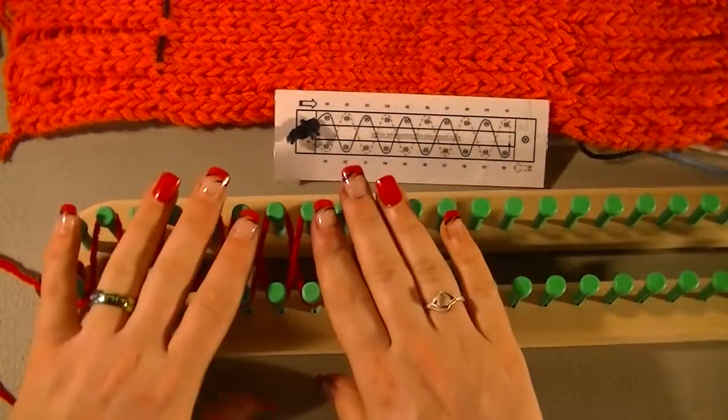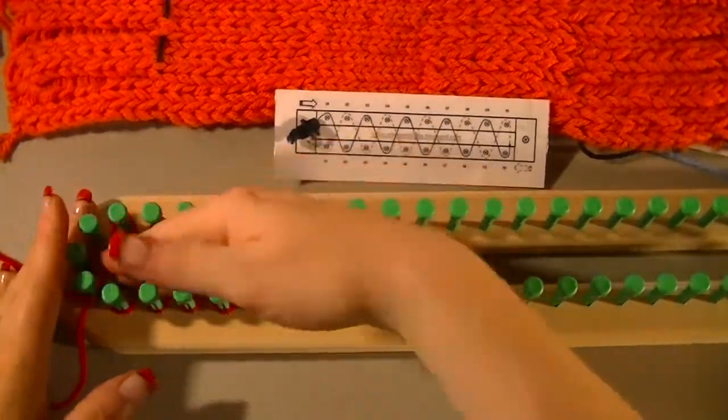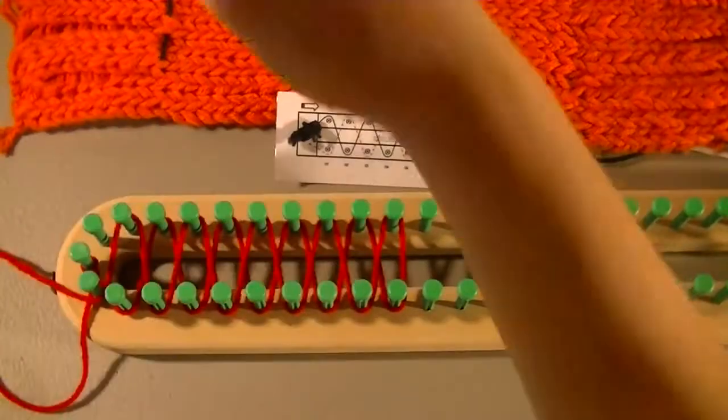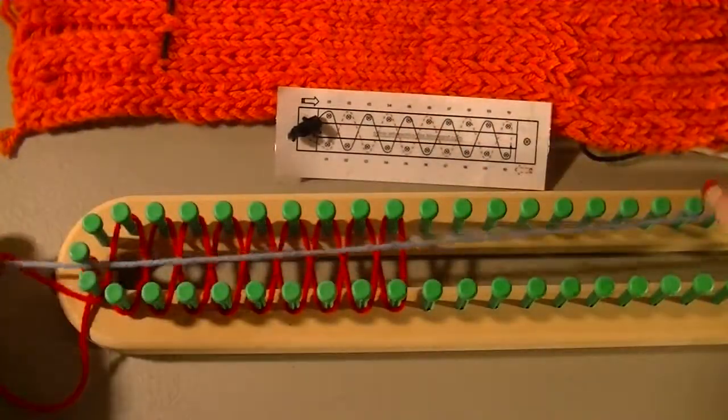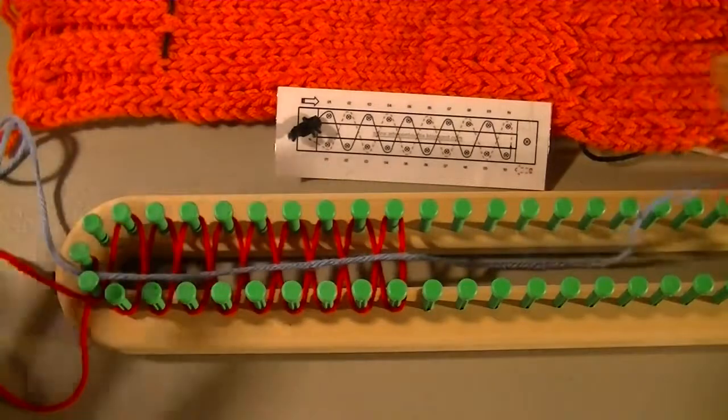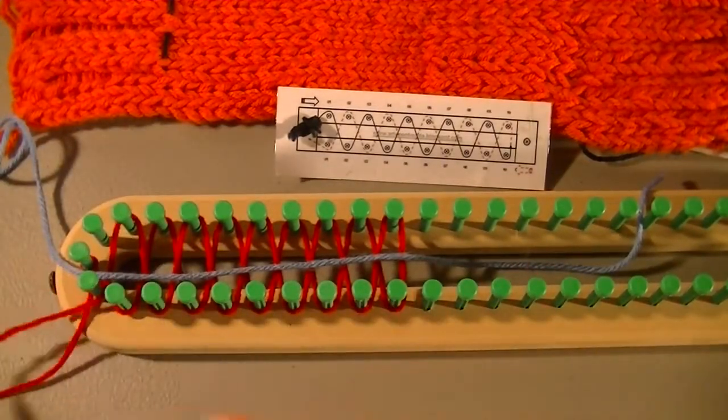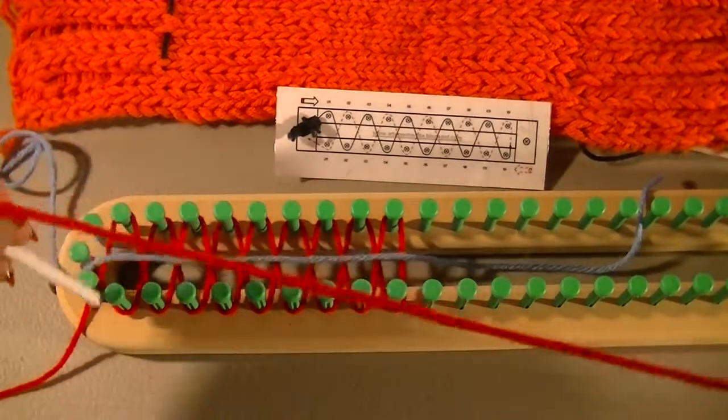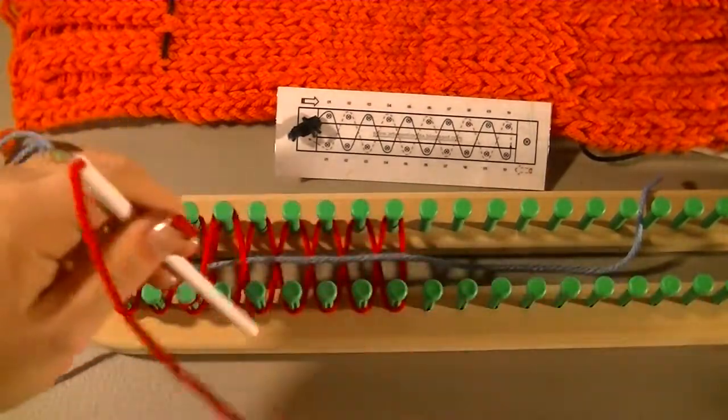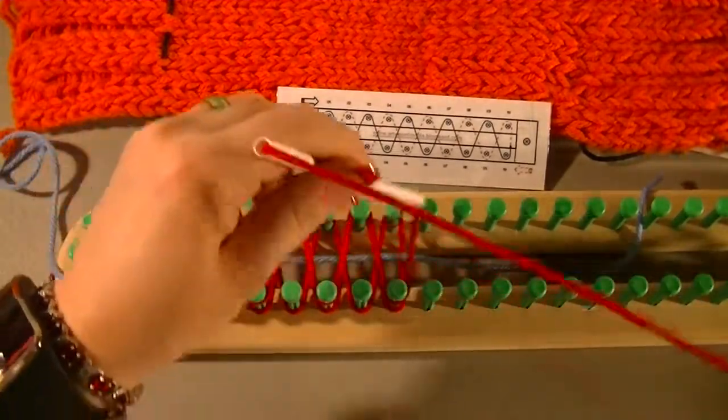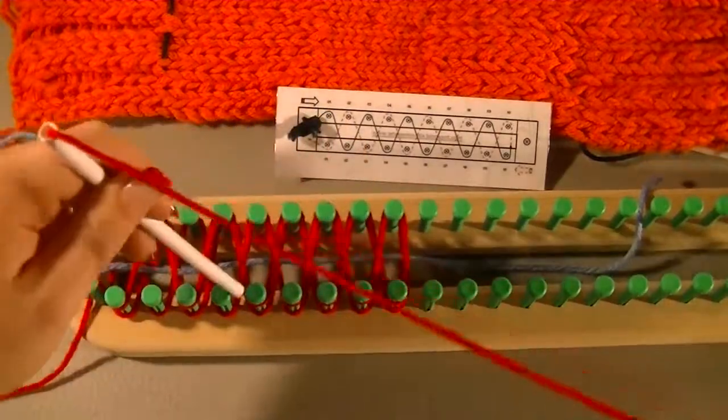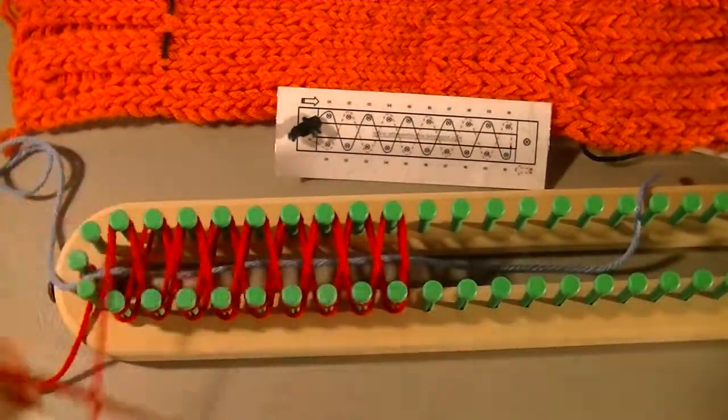But once you have one loop on each peg that you're going to be using, take a contrasting string, a contrasting yarn, and put that down, and then go back and fill in all the pegs that you had missed just like that.